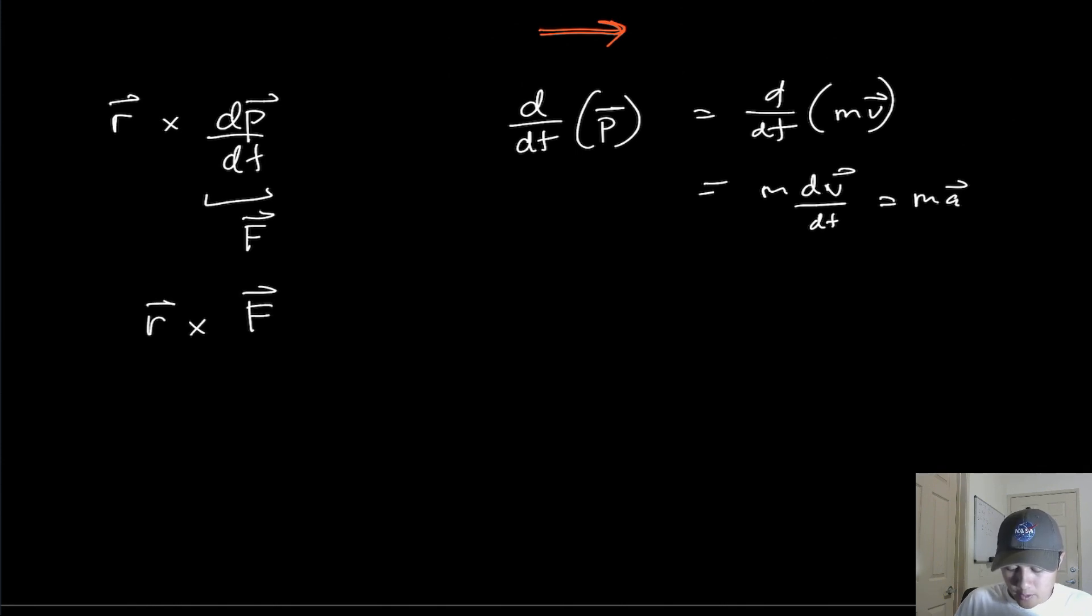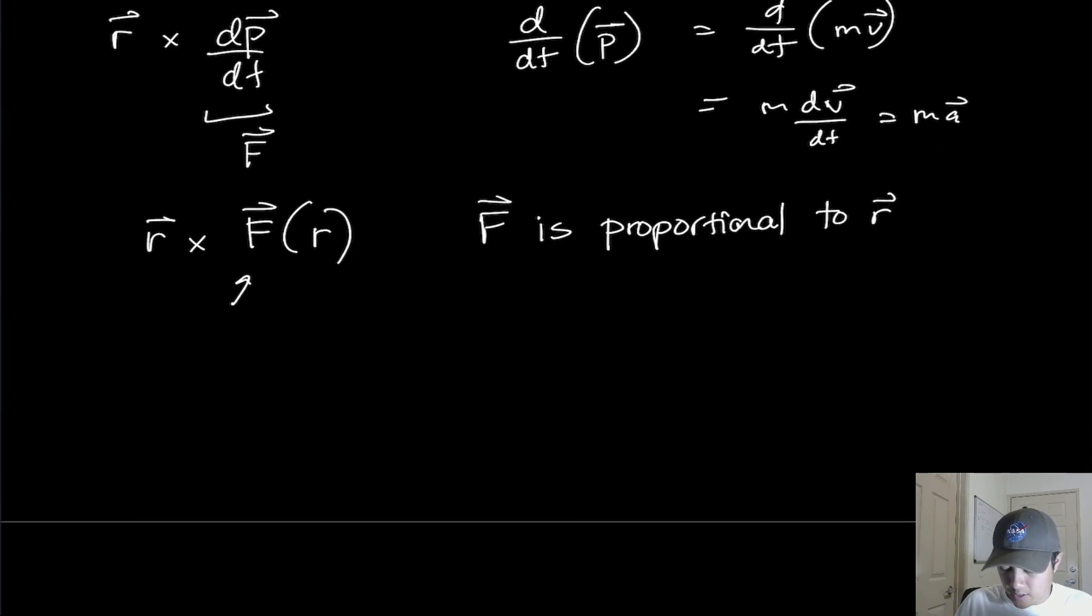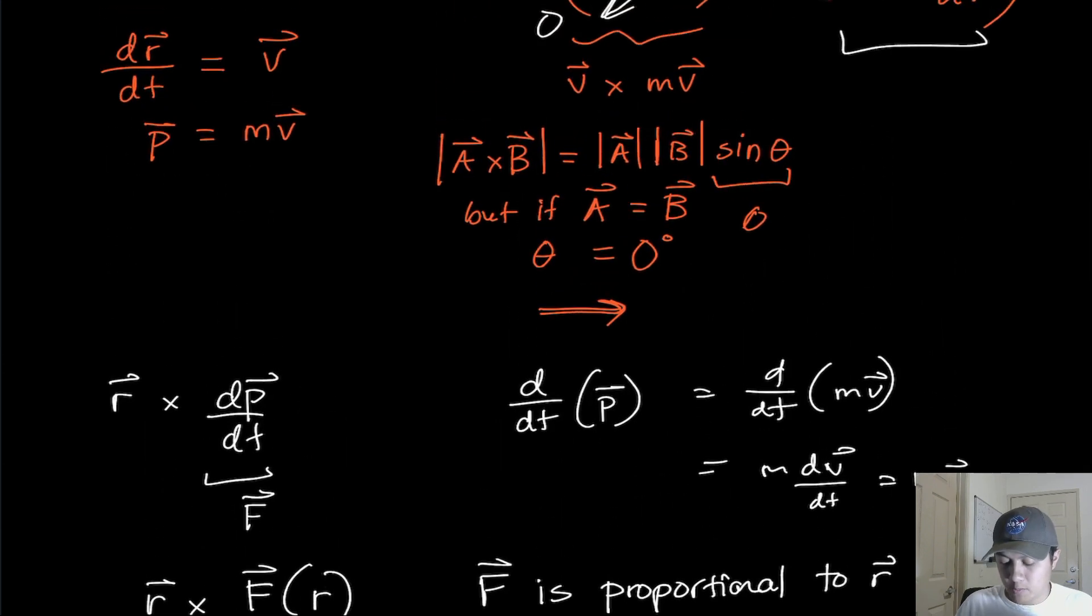Now, remember, F happens to be a function of just the magnitude R. So F is proportional to R due to the fact that it is a central force. And given that, we know that, again, from the definition of the cross product up here, we know that since those two vectors are proportional to each other, then the angle between them is going to be zero.